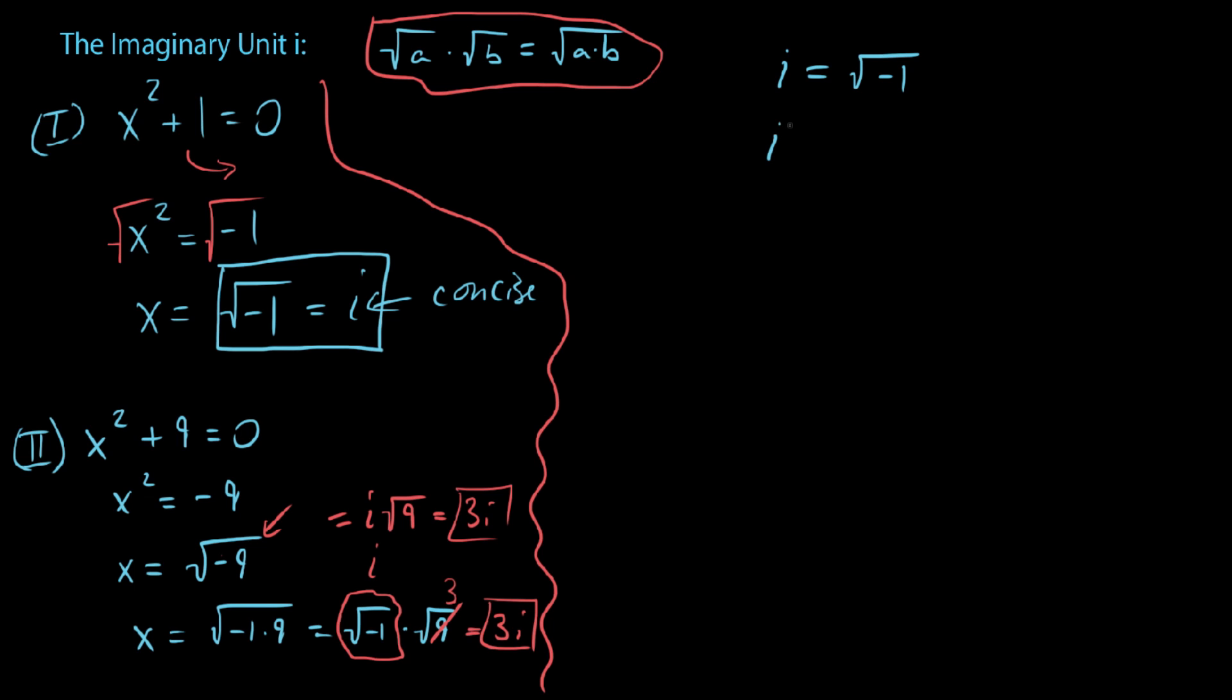We know that i equals the square root of negative 1. That being said, what if we were to encounter an i squared? Well, that would be the square root of negative 1 squared. And of course, we know what happens when you square a square root. It just cancels out, and you end up with negative 1. So as a rule of thumb, not a rule of thumb, it is just a fact, you need to remember that every time you see an i squared, it really means the same thing as just negative 1.